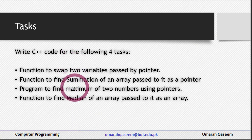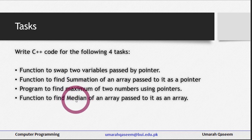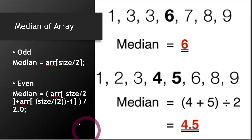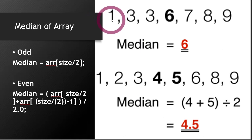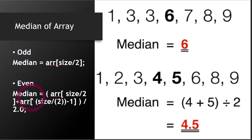I think the first three are easy and the last one is easy too, but maybe you have forgotten how to find a median of an array. To find the median of an array, you first check the count of the array — how many elements are there. If the number of elements is odd, there is one way to find the median, and if they are even, the formula is different.